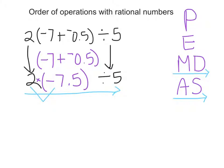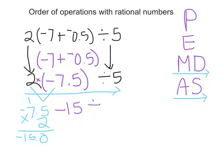I need to solve this from left to right, so I'm going to take this part first. Really I have negative 7.5 times 2, which if we do our math will add up to 15, but we have to keep the negative symbol — a negative times a positive is still a negative. So my answer is negative 15, and now I can divide by 5. Negative 15 divided by 5: 5 goes into 15 three times, and I keep the negative. So my answer is negative 3.